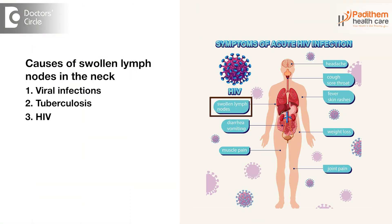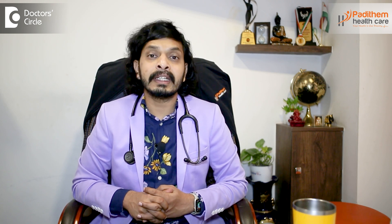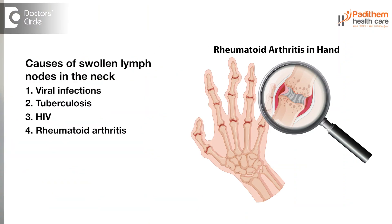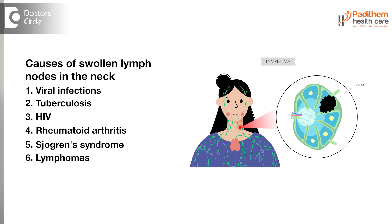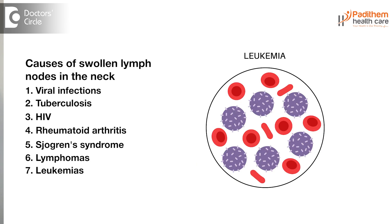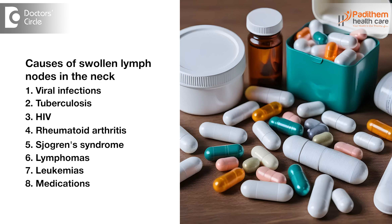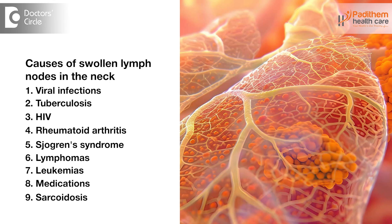The third cause is HIV, human immunodeficiency virus. HIV infection also definitely causes an increase in lymph node enlargement. Immunosystemic disorders like rheumatoid arthritis, Sjögren's syndrome, lymphomas, leukemias, or any other diseases can also cause an increase in the size of the lymph nodes. Certain medications can also cause lymph node enlargement, as can a disease called sarcoidosis.